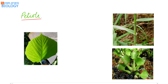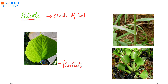Petiole is the stalk of the leaf. It holds the leaf blade or the lamina in light or wind. Leaves having a petiole are known as petiolate, while leaves without any petiole are known as sessile. In Eichhornia, that is water hyacinth, the petiole is swollen up.